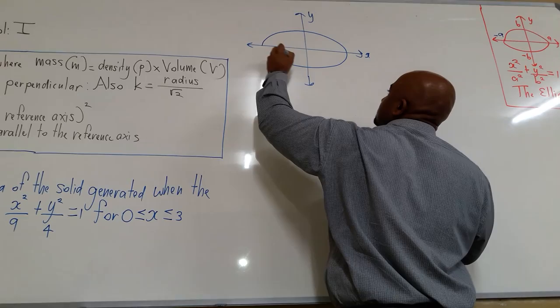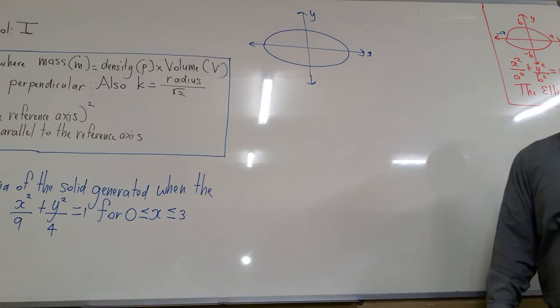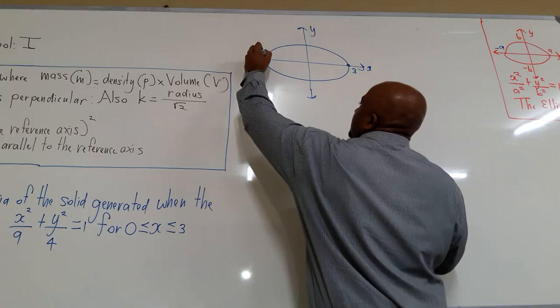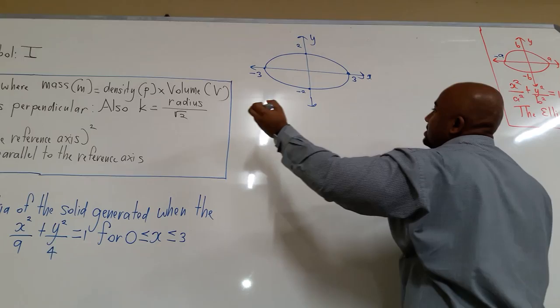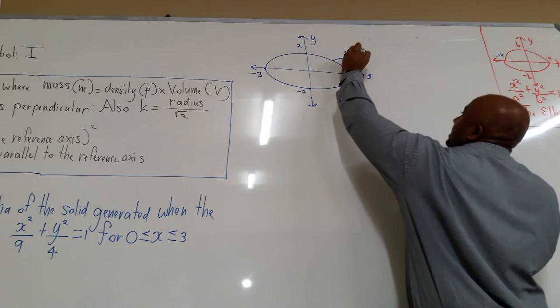By inspection, the x-intercepts are positive 3 and negative 3, and the y-intercepts are positive 2 and negative 2. Let's label the graph: x squared over 9 plus y squared over 4 is equal to 1.